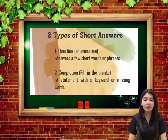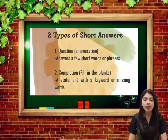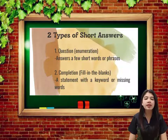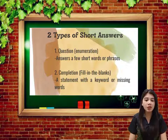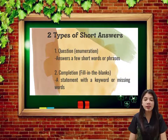There are two types of short answers. The first one is question enumeration, which is answered with a few short words or phrases. The second one is completion or fill in the blanks, which is a statement with a keyword or missing words.